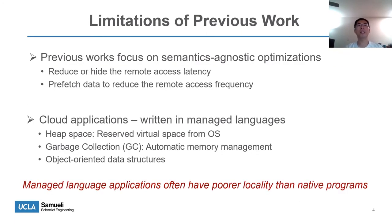Most previous works focus on semantics-agnostic optimizations, such as reducing or hiding the remote access latency, or designing a prefetch algorithm to reduce the remote access frequency. These works all assume applications have reasonable data locality. However, this assumption is usually not true for cloud applications written in managed languages. Managed language applications run on a runtime. The runtime requests a range of address space from the OS as the Java heap. The runtime uses garbage collection, GC, to reclaim data space on the Java heap.